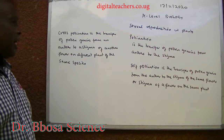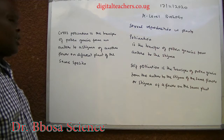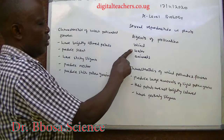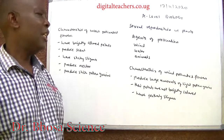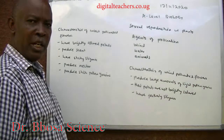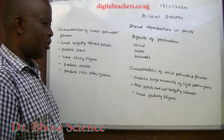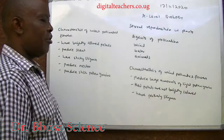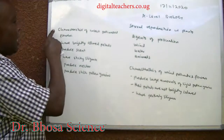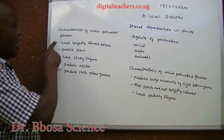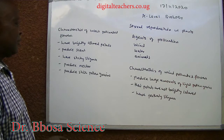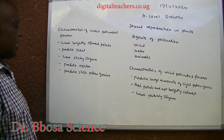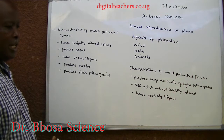Cross-pollination is the transfer of pollen grains to the stigma of another flower on a different plant of the same species. Agents of pollination include wind, water, and animals, which include insects. Characteristics of wind-pollinated flowers: they produce large amounts of light pollen grains, their petals are not brightly colored, and they have feathery stigmas. Characteristics of insect-pollinated flowers: they have brightly colored petals, produce scent, have sticky stigmas, produce nectar, and produce sticky pollen grains.